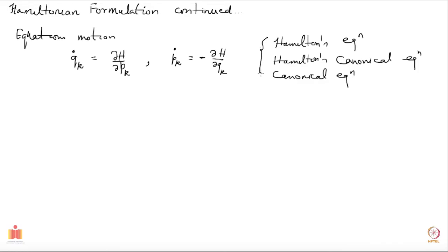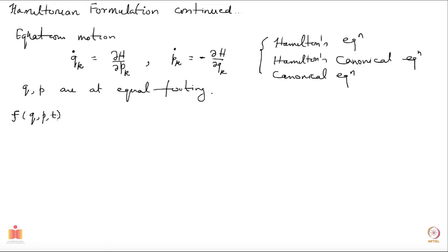Remember that q and p are at equal footing now, and that is why we are working in the phase space. Let us say I take some function f which is a function of the coordinates q and conjugate momenta p, and possibly time. We ask how this function will evolve with time, and its time evolution will be governed by the time evolution of q and p, which are in turn determined by the canonical equations.